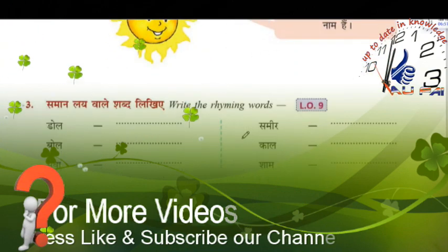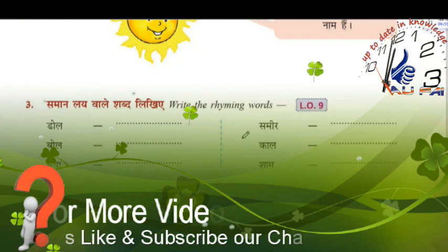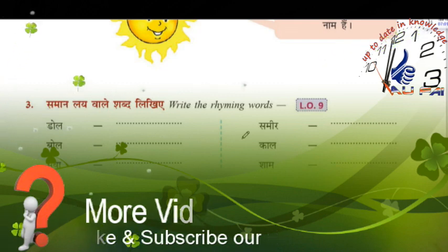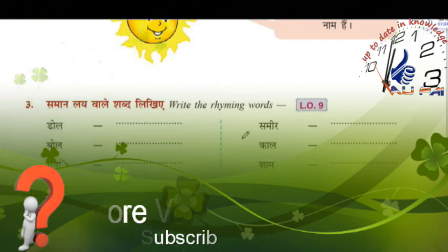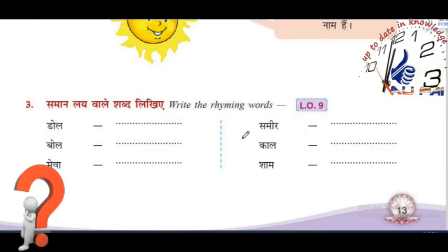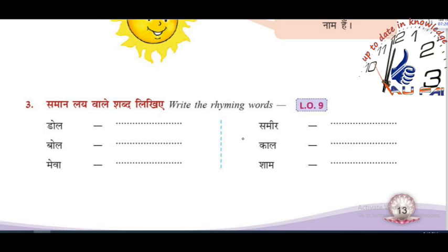Now come to the learning objectives of number nine. We already know that Madhuparang Publications are designed under national education policies, which have more than 20 skills and goals. The ninth objective is information and communication skills.